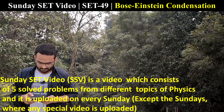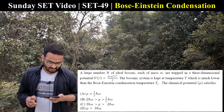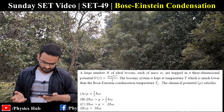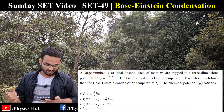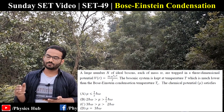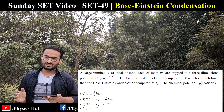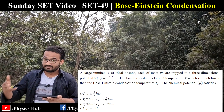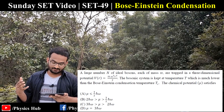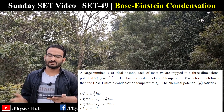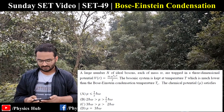Without wasting much time, let's start. The first question reads: a large number N of ideal bosons, each of mass m, are trapped in a d-dimensional potential V(r) = m·ω²·r²/2. The bosonic system is kept at temperature T which is much lower than the Bose-Einstein condensation temperature T_c. The chemical potential μ satisfies which condition?